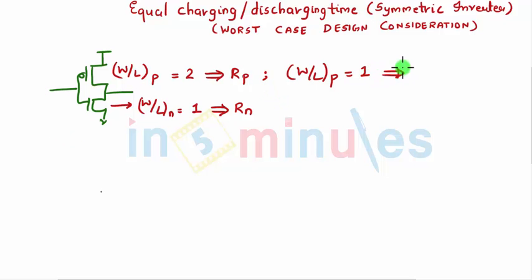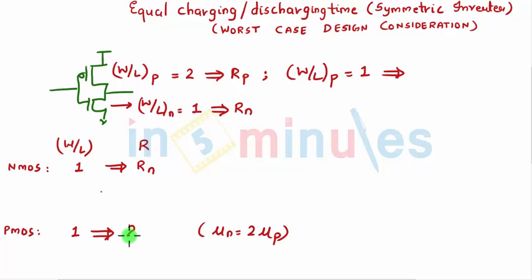Very simple. (W/L) and resistance are inversely proportional. For NMOS, if my (W/L) is 1, I get the value of resistance equal to Rn. Equivalent resistance for PMOS: if my (W/L) was 1, I knew that charging time would have been more or the resistance would have been of a higher value. I'm presuming that mu_n is equal to twice mu_p, then this would have been two times slower.